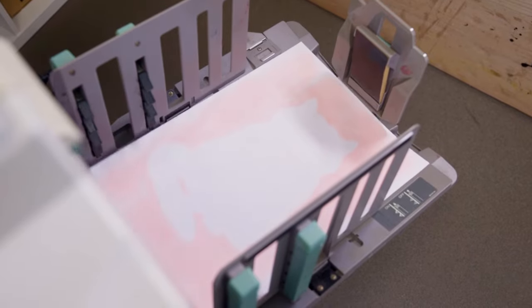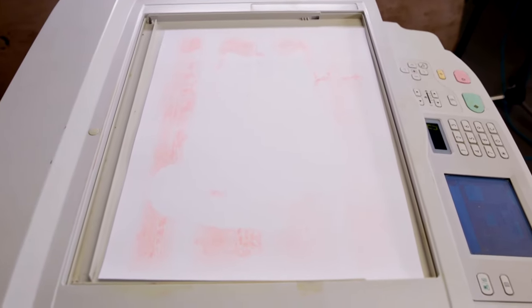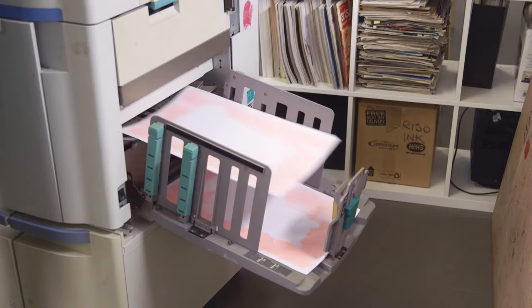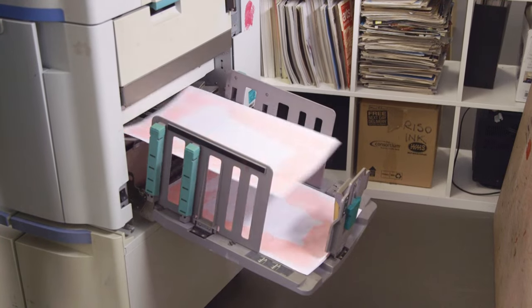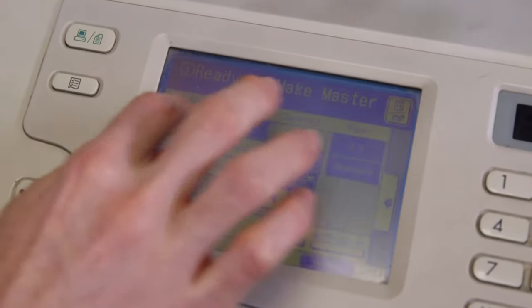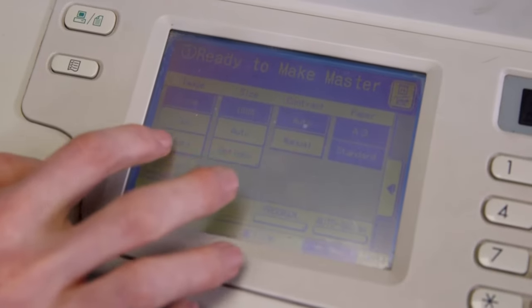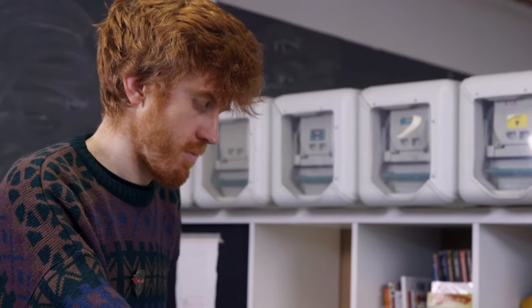The first few prints come out a bit dry, so it's worth sending four or five through first just to let the ink start flowing properly. At this stage, I might adjust the opacity of my image or fiddle with my original artwork a bit if I'm not happy with how it's coming out. If it's not right, it's worth making a new master.